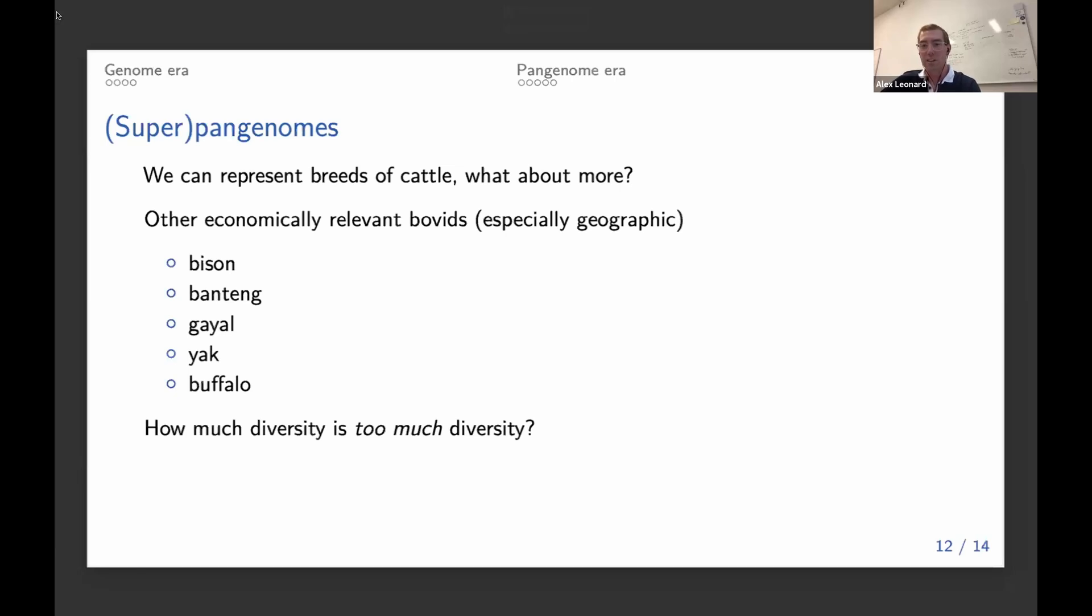But the question is how far is too far? If we include all the diversity across all these different species, will the graph just become too complex, too messy for us to actually use?